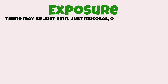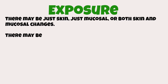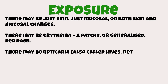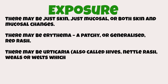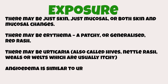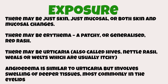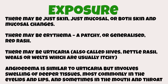E is for exposure, so it's important to examine the patient because areas of erythema can be affecting the skin, the mucosa, or both the skin and mucosa. There may be evidence of erythema or a patchy generalised red rash. There can sometimes be urticaria presenting as a nettle rash or welts, and it may also present as severe angioedema leading to swelling of the lip and tongue, which can also lead to swelling of the airways.